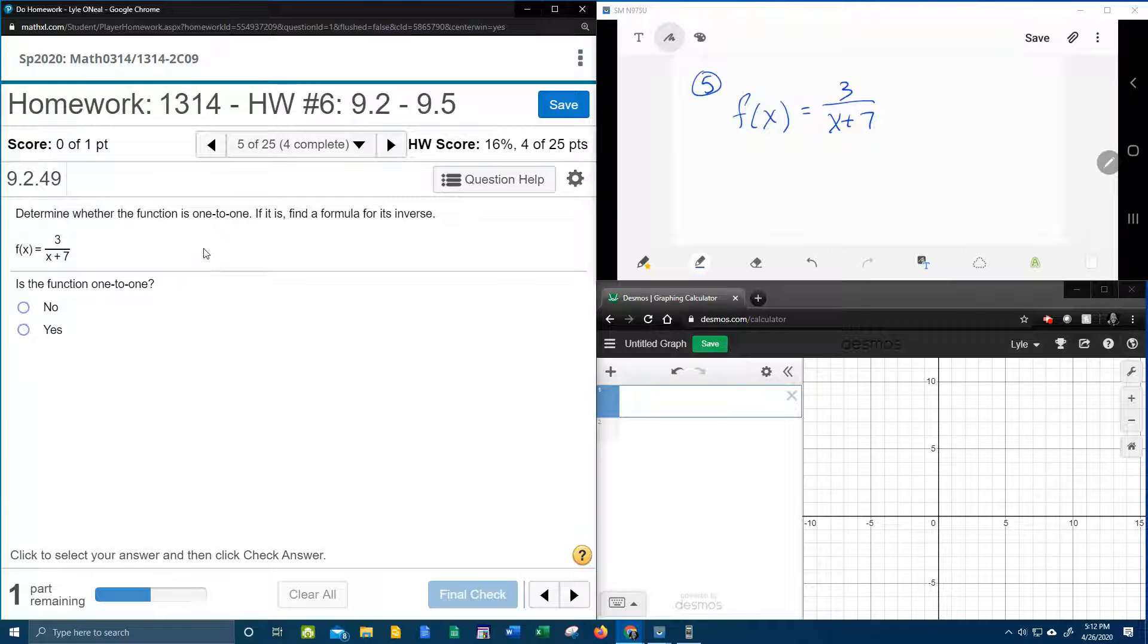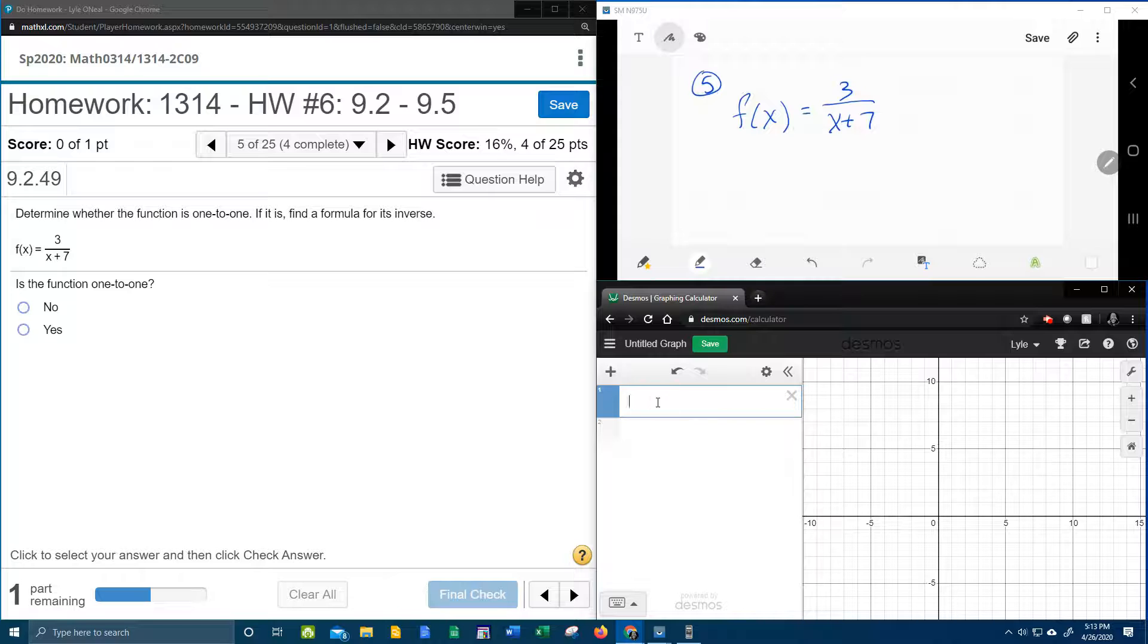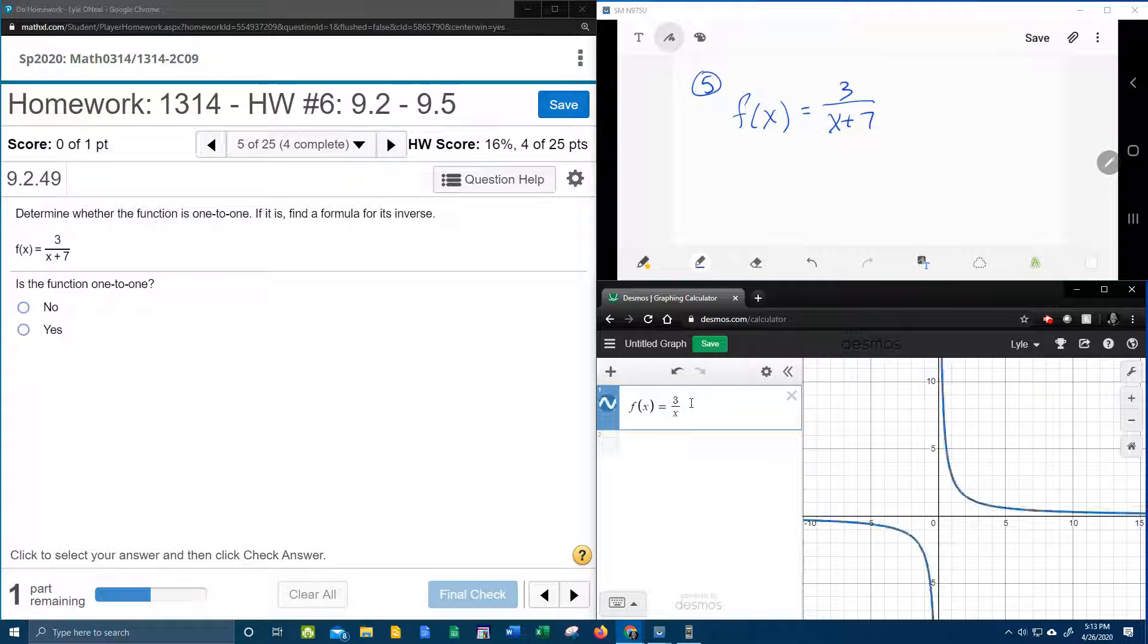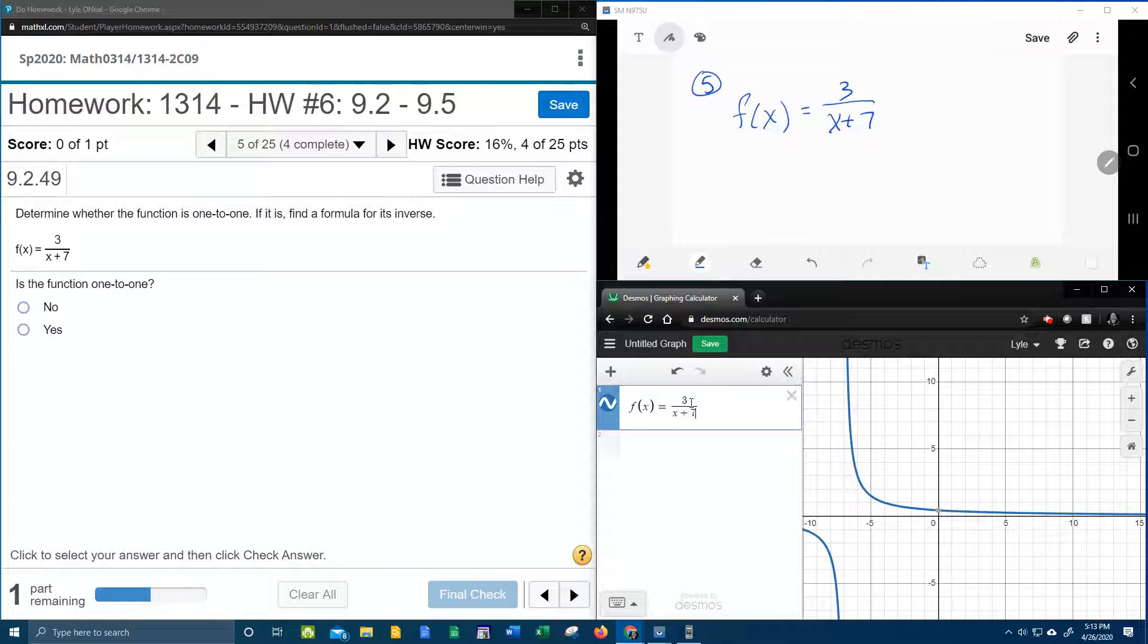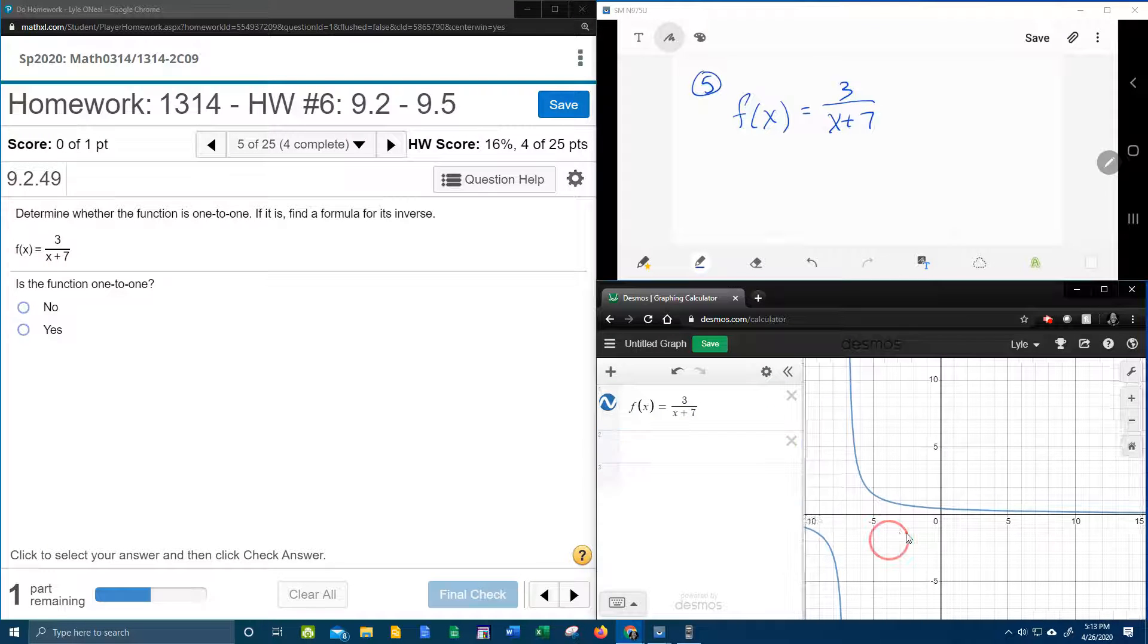One of the ways that you can check for one-to-one is you can look at the graph. That is really easy to do with Desmos. So with Desmos, let's look at the graph real quick. It's 3 over x plus 7.